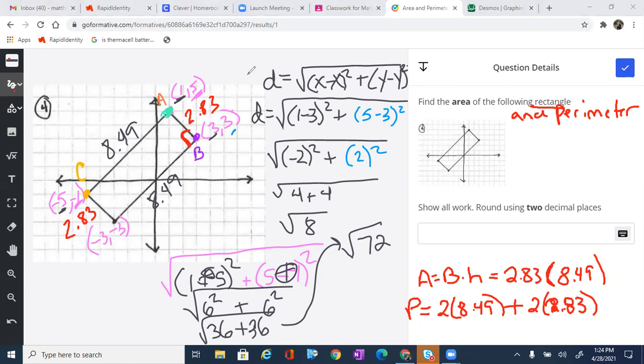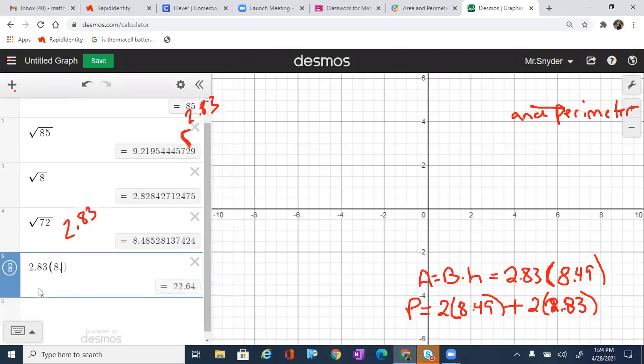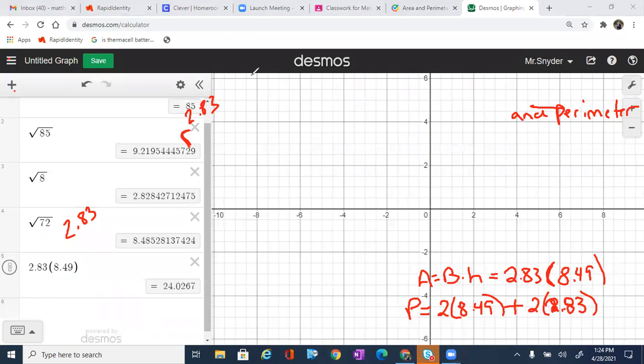Now, once we've got that, we're going to go off to Desmos. We're just going to type that in. So I'll find the area first. So 2.83 times 8.49, which is going to bring us to 24.026, or we could say 24.03.